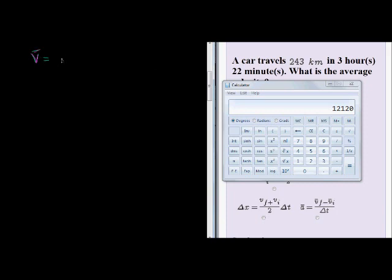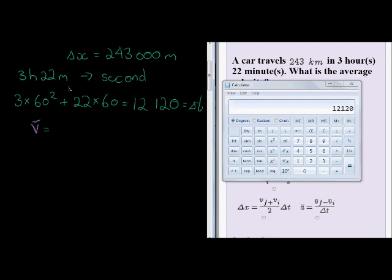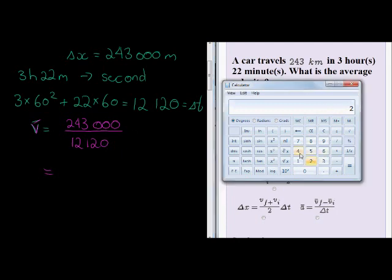Average velocity is change in displacement, which is 243,000, divided by 12,120. When we get our answer, 243,000 divided by 12,120 equals 20.05 meters per second. Actually we must round to two decimal places, so 49 will become 50, that's 20.05 meters per second.